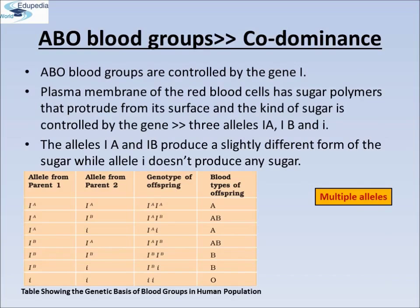Another good example is the different types of red blood cells that determine ABO blood grouping in human beings. ABO blood groups are controlled by the gene I. The plasma membrane of the red blood cells have sugar polymers that protrude from its surface, and the kind of sugar is controlled by the gene. The gene I has three alleles: capital IA, capital IB, and small i. The alleles capital IA and capital IB produce a slightly different form of sugar, while the allele small i does not produce any sugar.